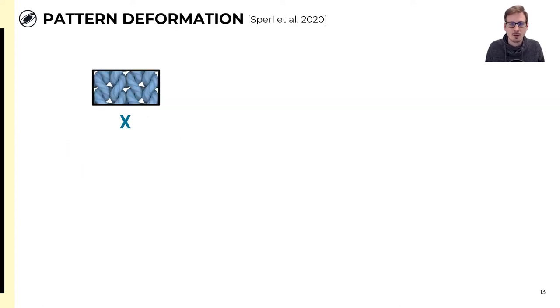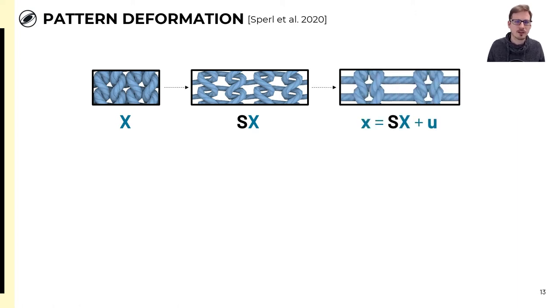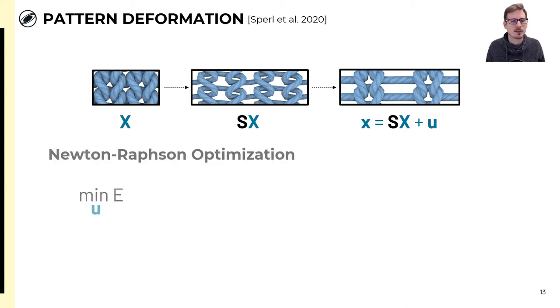To review our method for pattern deformation, we start with the undeformed configuration of a periodic yarn pattern, whose centerline vertices we denote by capital X. We want to know how this pattern physically adapts to some large-scale deformation. If we only consider planar deformations, then we can describe this large-scale deformation as S times X, where S is some matrix encoding stretching along two directions and shearing. S is constant over the entire pattern, meaning that it moves all vertices uniformly, analogous to what we saw for our embedded mapping. And we'll see a bit later in the presentation why in-plane deformations alone are enough here. Then the final vertex position after physically adapting to S can be expressed as lowercase x, which is equal to S times X plus some displacements U. And we want to compute these displacements U such that the yarns are at equilibrium for some input deformation S.